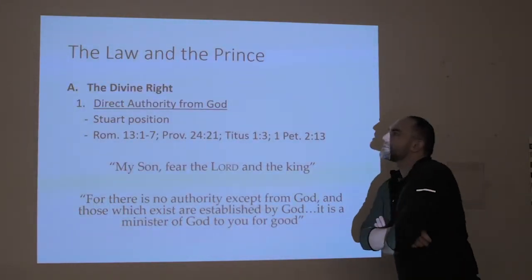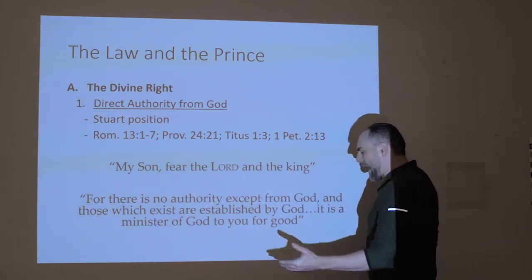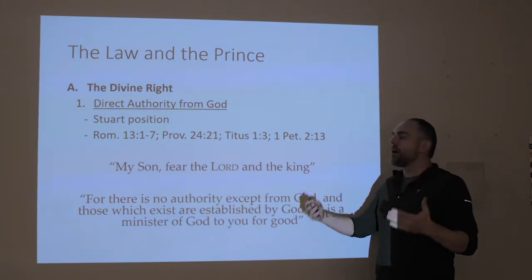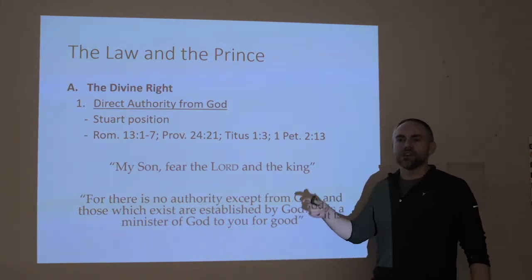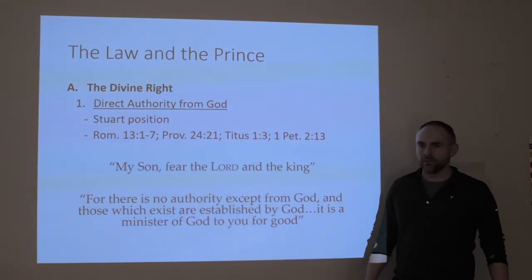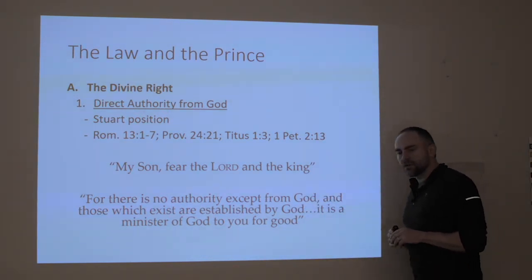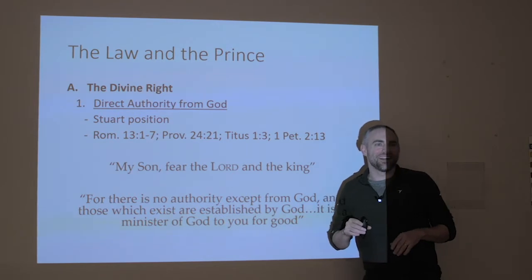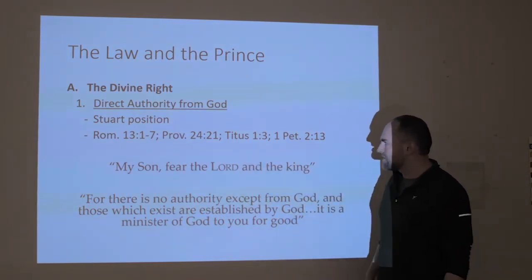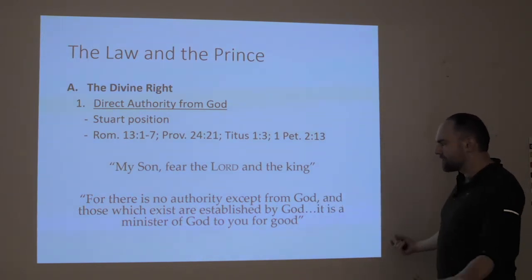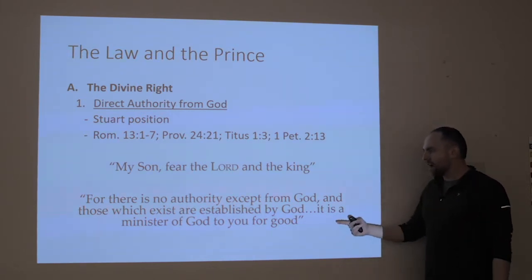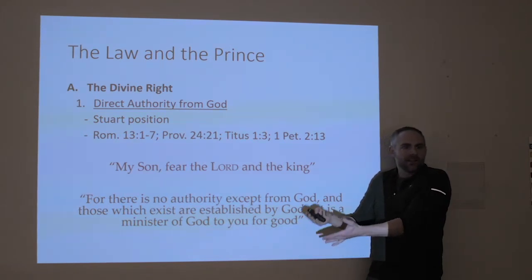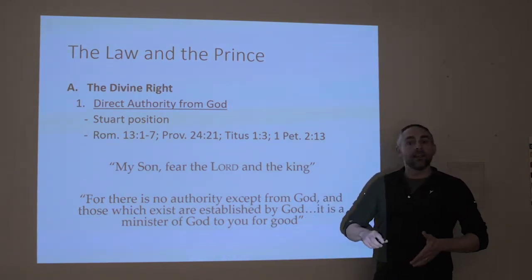The divine right. One theory of a sovereign's power and right to rule is a very simple and direct authority having been bestowed upon them by God — that God has somehow directly chosen the Stewart family to be in charge of these three kingdoms. This is the sort of thing people even today appeal to. We have things like this in Romans 13:1: 'For there is no authority except from God, and those which exist are established by God.' And Romans 13:4: 'It is a minister of God to you for good.' This would seem to say that authorities are established by God — God's put them in place, and therefore you need to submit to them.